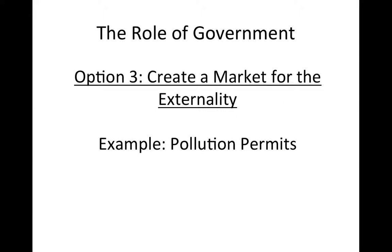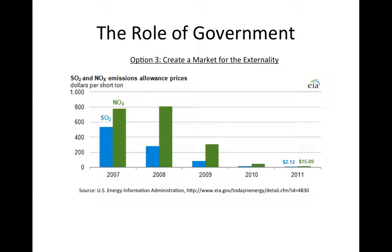The government's final option is to create a market for the externality itself. For example, the government can require that before a firm can produce a good that results in pollution, the firm has to buy a permit for each unit of pollution that it generates. As with a tax, the need to buy a permit will increase firms' costs, shifting the supply curve up and moving the market quantity closer to the optimal quantity. Pollution permit markets have been proposed as one way to reduce emissions of carbon dioxide associated with global warming. They were also used in the United States to limit emissions of acid rain generating pollutants from the mid-1990s through the first decade of the 2000s.